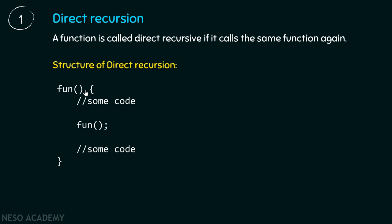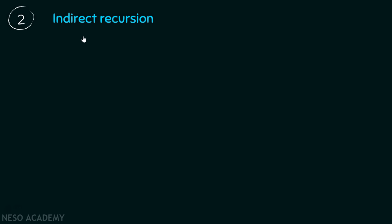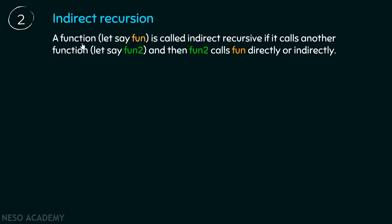But what is indirect recursion? A function, let's say fun, is called indirect recursive if it calls another function, let's say fun2. And then fun2 calls fun again, directly or indirectly.